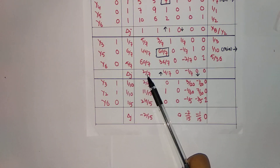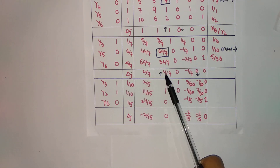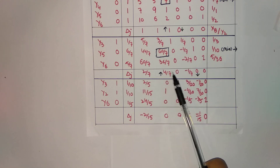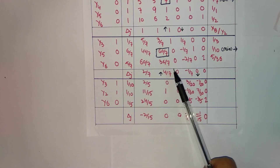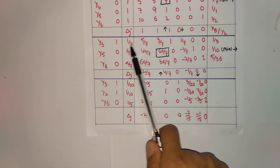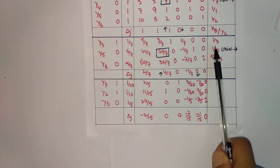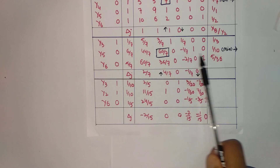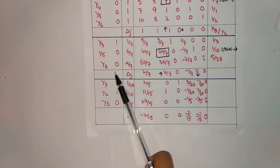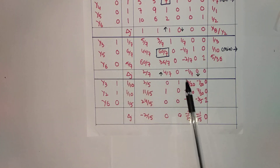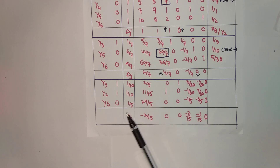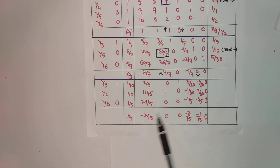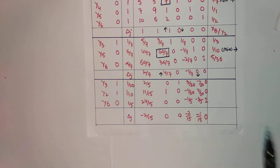After updating, ΔJ is still greater than 0 for two columns. The largest value is 4/7, so that column enters the basis. The minimum ratio gives 1/10, so that row leaves. After constructing the new simplex table, all ΔJ ≤ 0. This is the required optimal solution.